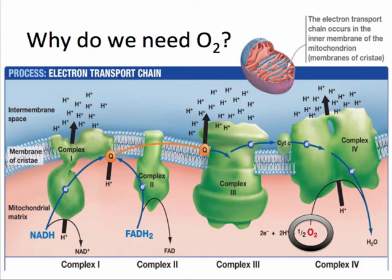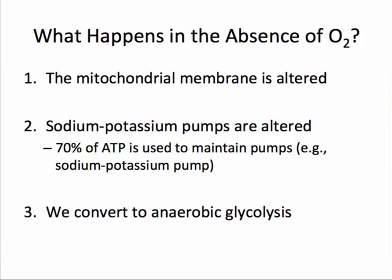As you move through each complex in the chain, a concentration gradient of hydrogen ions develops on one side of the mitochondrial membrane. Oxygen is then required to accept the final electron at the end of the chain. If oxygen is absent here, we would not be able to perform aerobic metabolism. Without oxygen, the mitochondrial membrane is altered. Seventy percent of all of our ATP synthesized is used to maintain pumps, for example the sodium potassium pump. Because we no longer have aerobic metabolism and thereby less ATP, sodium potassium pumps are altered and we eventually convert to anaerobic glycolysis.